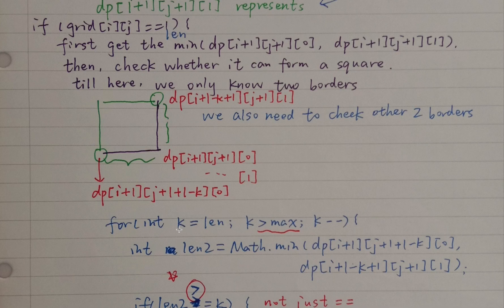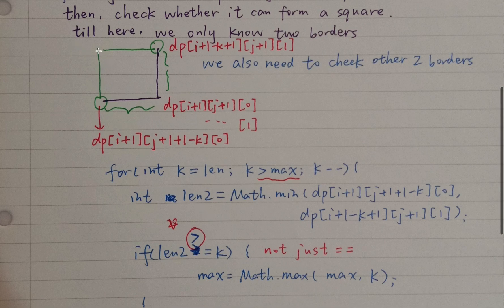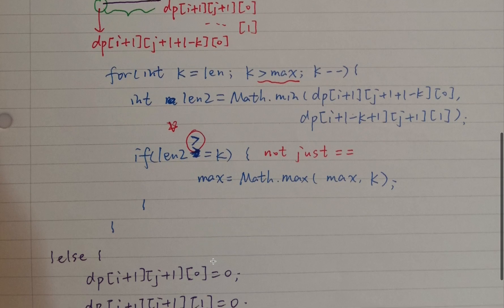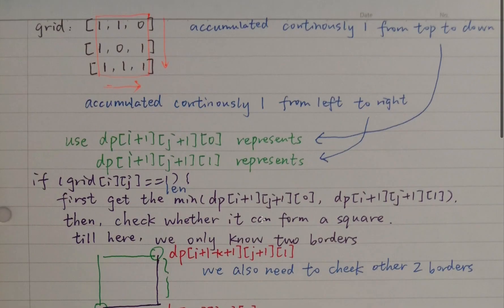The inner loop variable k represents the length of the possible square. It starts from the maximum possible length but should be greater than the global max side length, because when the length is less than the current max, there is no need to calculate. We get the minimum length of the two sides, and when length2 is greater than or equal to k, that means we can form a square with side length equal to k. You should use greater or equal, not just equal, because these dp values may be greater than the possible length. So in the end we just return max times max.